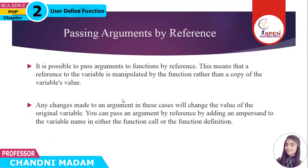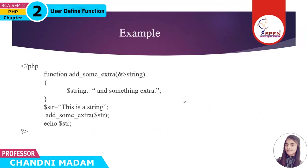Next is passing arguments by reference. In the previous example, when you change the value of the argument within the function it does not get changed outside the function. But if you wish to allow a function to modify its argument, you must pass it by reference. When you pass a variable by reference, any change to the argument will reflect in your original variable. You pass an argument by reference by using an ampersand (&) before your variable name.